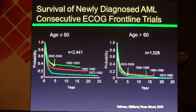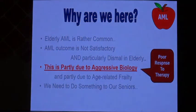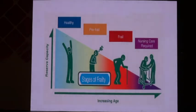Even with changes in medicine and hematology, improvement in acute myeloid leukemia outcome was centered around improving outcomes of young patients less than 60. If you look at the outcome over more than 30 years, the outcome for elderly patients hasn't changed significantly despite advances in medicine. This is partly due to the aggressive biology resulting in poor response to therapy, and also age-related frailty causing higher treatment-related mortality and morbidity.